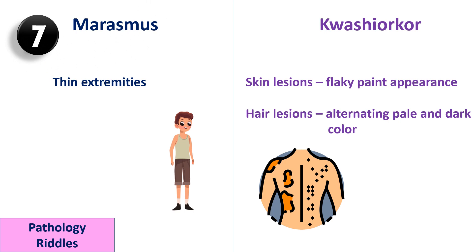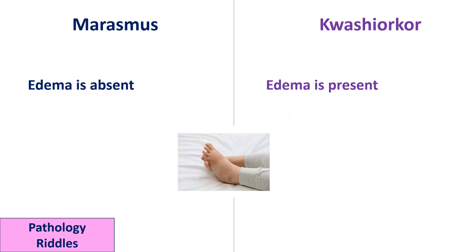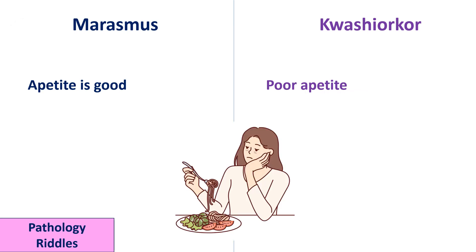In marasmus, the patient has thin extremities, whereas in kwashiorkor there are skin lesions called flaky paint appearance, and hair lesions with alternate pale and dark color of the hair. In marasmus, edema is absent, whereas in kwashiorkor edema is present.